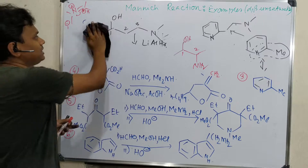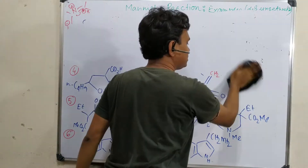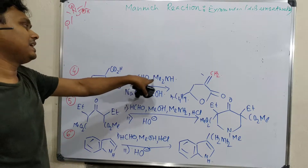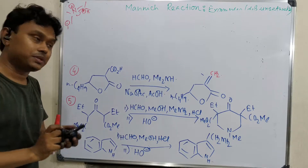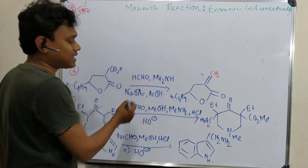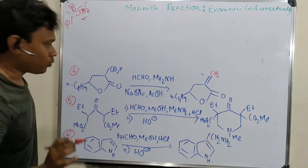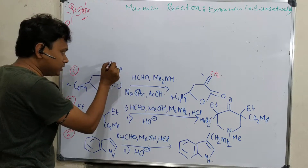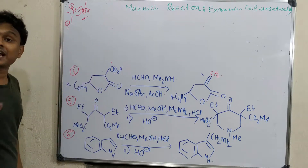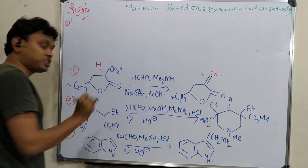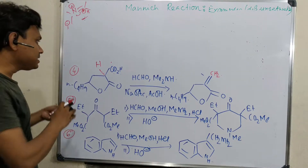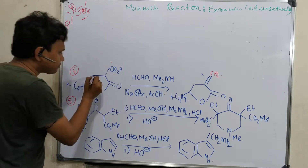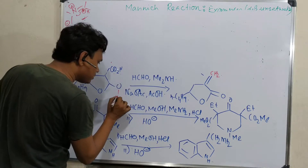Now the fourth example is a little tricky because the reactant is a relatively complicated molecule. Whenever this condition — aldehyde, secondary amine, acid — is given, keep in mind it is a Mannich reaction, and formaldehyde reacts with the amine in the presence of acid to produce the electrophile. You have to identify the functional group. This is a lactone, and this is a carboxylic acid — with respect to the carboxylic acid, this is the alpha position. This makes it an active methylene derivative, so this proton is sufficiently acidic and easy to enolize.